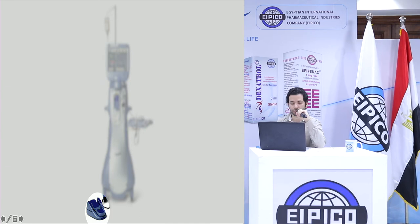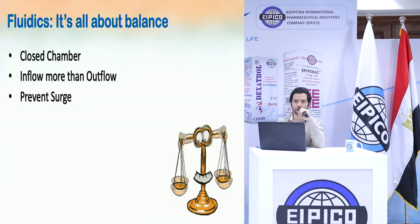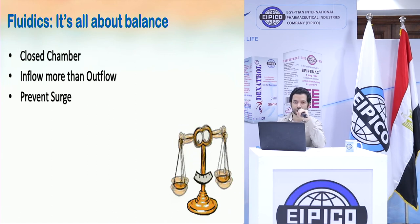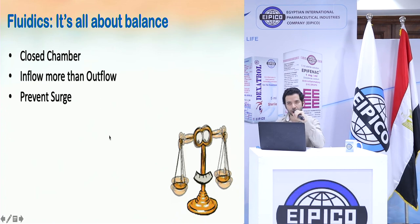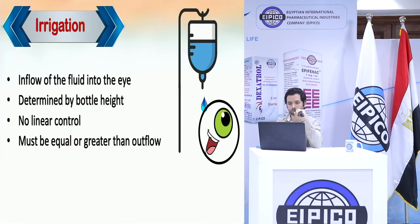The surgeon can control the different steps of the surgery using the foot switch. The basic principle of phacoemulsification is balance — the eye is a closed chamber. There is a source of fluid coming inside the eye, the inflow, and there is outflow from the eye. We must always ensure that the inflow equals the outflow, or more preferably that the inflow is greater than the outflow, because this way we avoid a major problem called surge, which we will discuss at the end of the session.